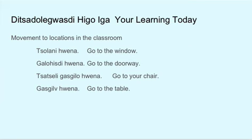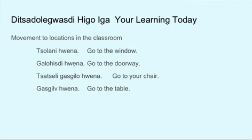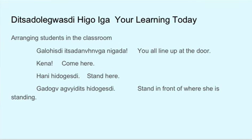Dijidolekwastihigoiga — You're learning today: Movement to locations in the classroom. Dolani. Wena — Go to the window. Galohisti. Wena — Go to the doorway. Dazelgaskilo. Wena — Go to your chair. Go to the table. Dijidolekwastihigoiga — You're learning today: Arranging students in the classroom. Galohisti. Ijijananaga nigada — You all line up at the door.